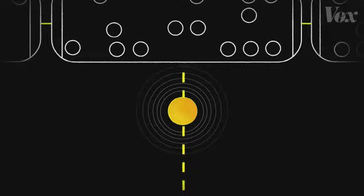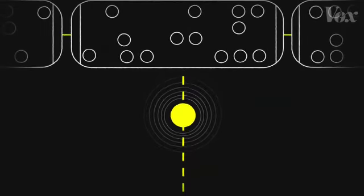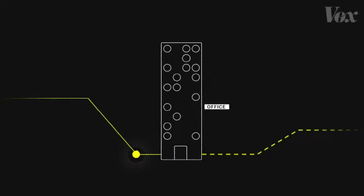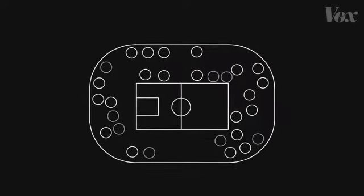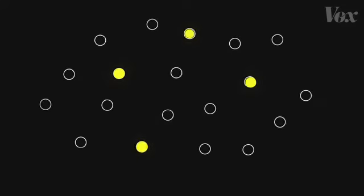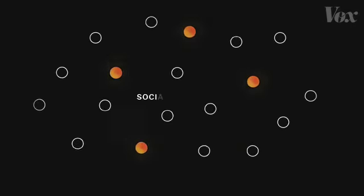To slow the virus down, you need to act as if you already have it. By avoiding public transportation, the office, crowded places, and even small social gatherings, you decrease your chances of both getting the disease and spreading it. This is called social distancing.